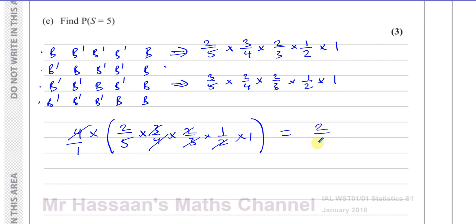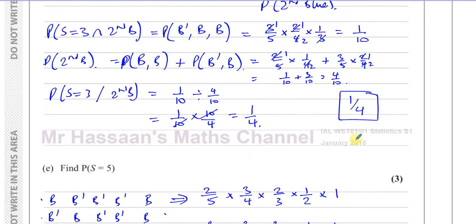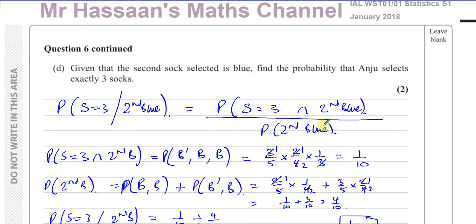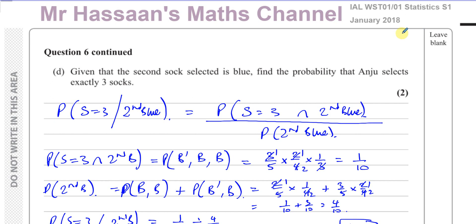The probability that S equals five is 2/5. That concludes question six from the January 2018 international A-level S1 paper. Other questions from this paper are in the playlist, and you can find more discrete random variables questions from S1 in that playlist as well. Subscribe by clicking the link. Thank you for watching.